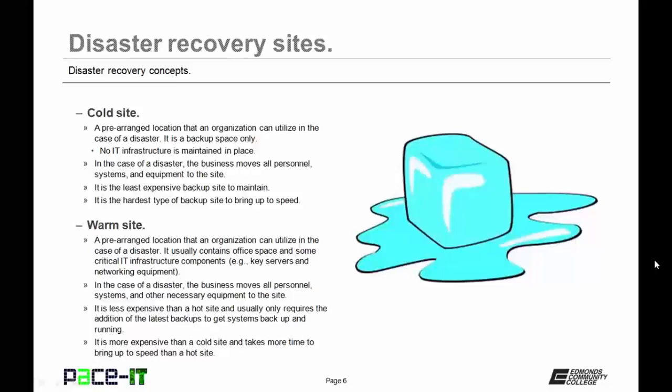The first one is the cold site. A cold site is when a company creates a pre-arranged location that the organization can utilize in the case of a disaster. It is a backup space only. There is no IT infrastructure that is put in place or maintained at the cold site. In the case of a disaster, the business moves all personnel, systems, and equipment that's required to the site. It is the least expensive backup site to maintain, but it's also the hardest type of backup site to bring up to speed.